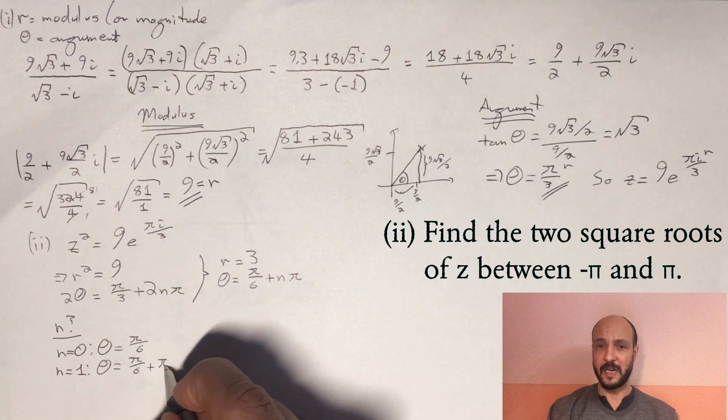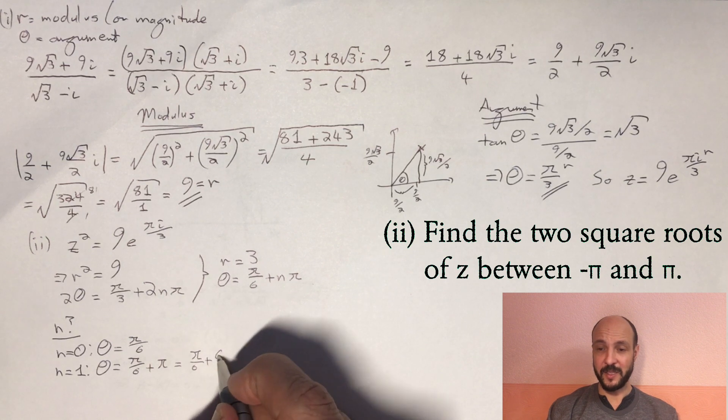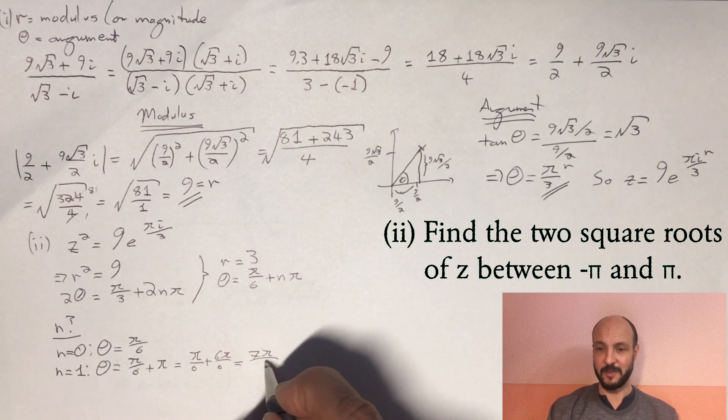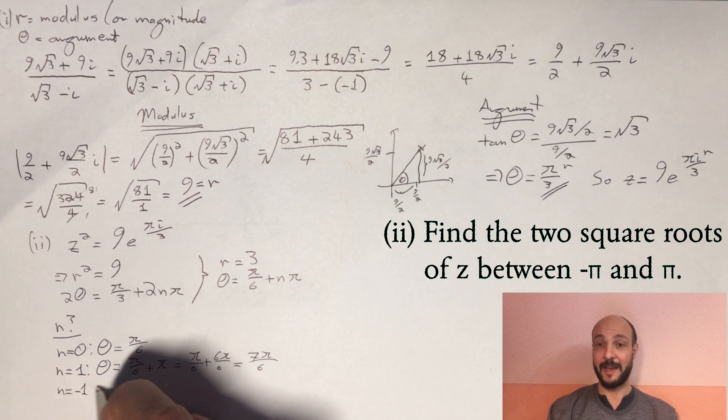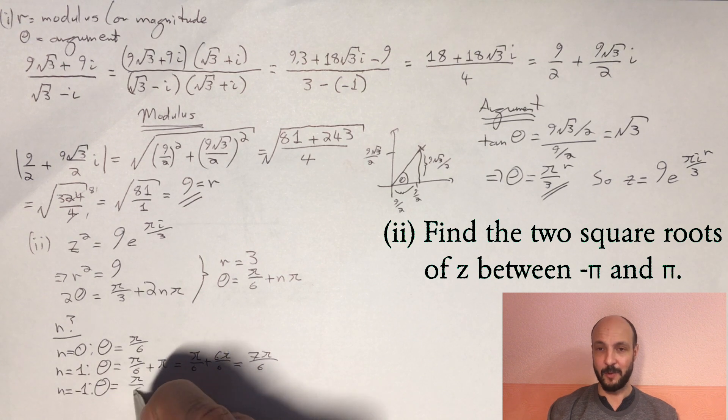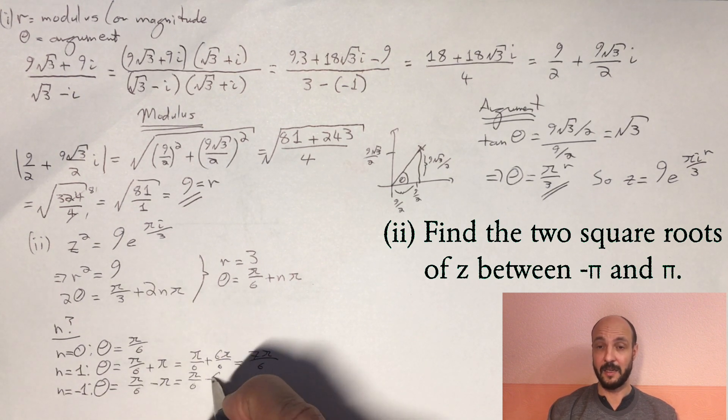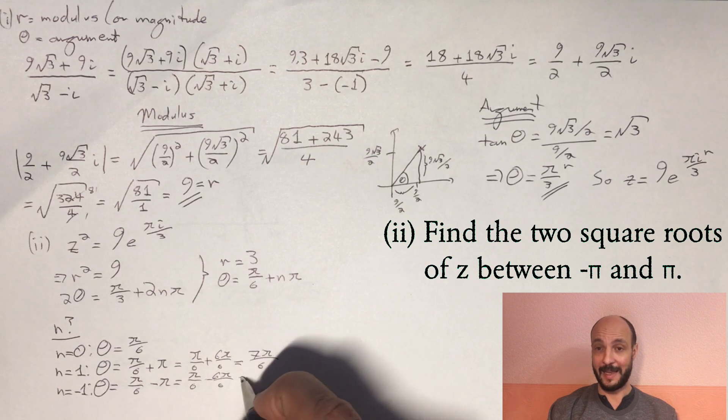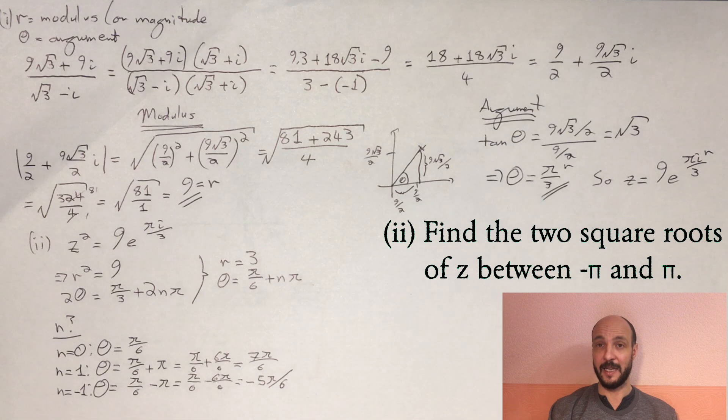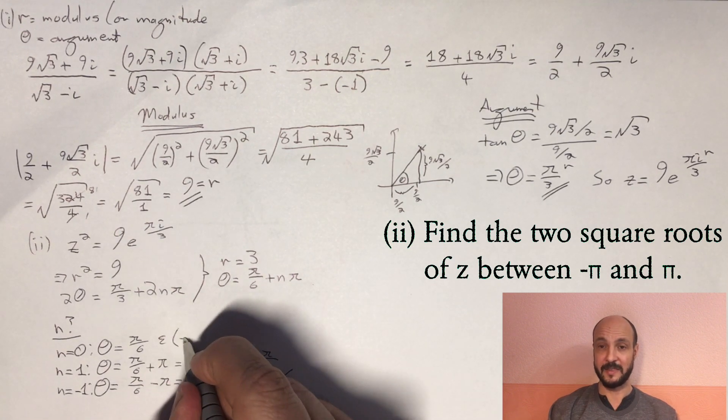So we've got our r as 3. The theta, we need to check which ones fit within our given domain, which is that theta must be between minus π and π. Well, clearly if n is 0, π/6 is between minus π and π. How about if we add n's to it? If we try by subtracting 1, if we make n into minus 1, we've got π/6 - π, which is minus 5π/6. That's between minus π and π, so that's fine.